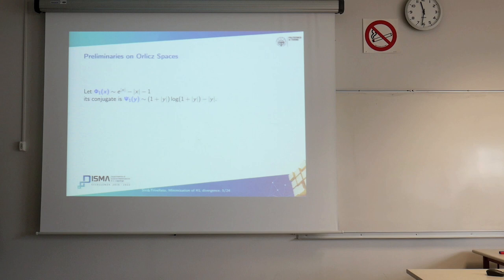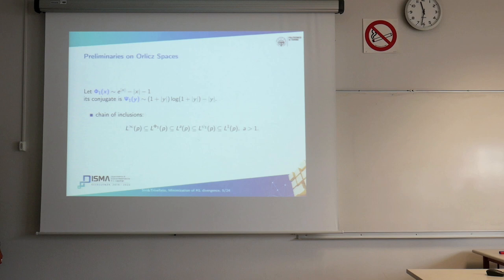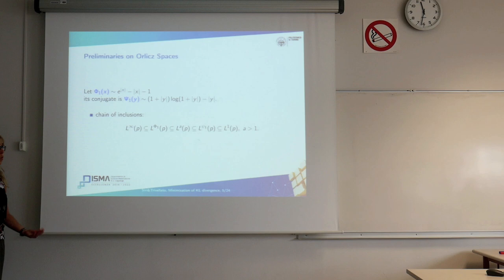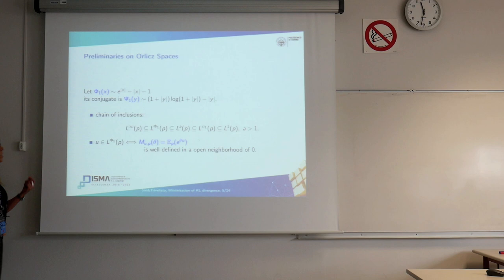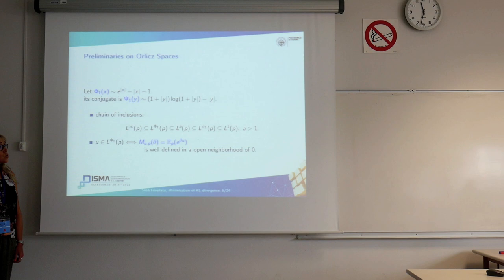In particular, we consider two classical Young functions: the exponential Young function phi_1 and its conjugate, the logarithmic function. With this choice, we have a useful chain of inclusions involving the Orlicz spaces L_phi1 and L_psi1 and the Lebesgue spaces. Importantly, when a random variable belongs to the Orlicz space L_phi1(p), it is essentially a random variable whose moment generating function is well defined in an open neighborhood of zero.